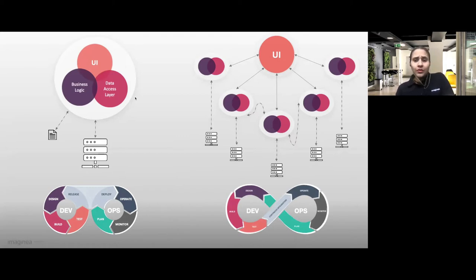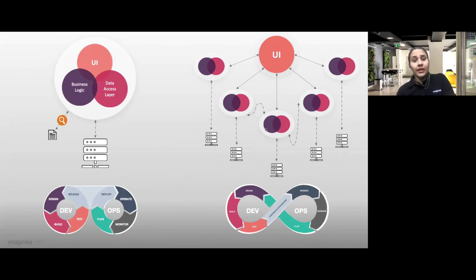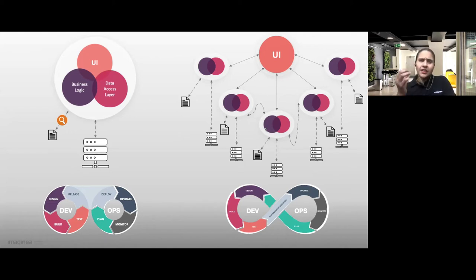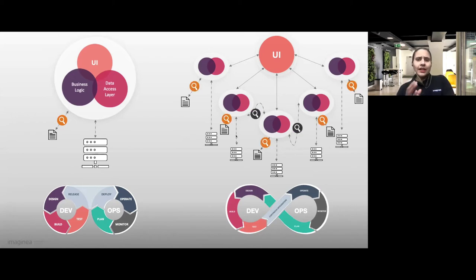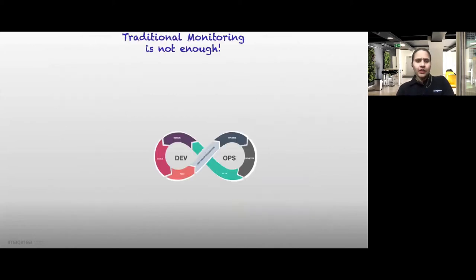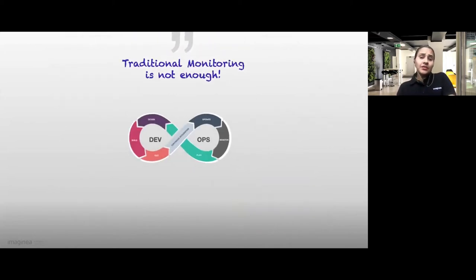If we consider the monolith application, the system is homogenous — similar development, testing, and even monitoring sources. With microservices, where there are many moving parts and they generate a myriad of data, say something goes wrong — identifying the root cause of an issue is like finding a needle in a haystack. Even Gartner says that traditional monitoring tools leave a gap in providing the data insights which are required. Traditional monitoring is simply not enough.